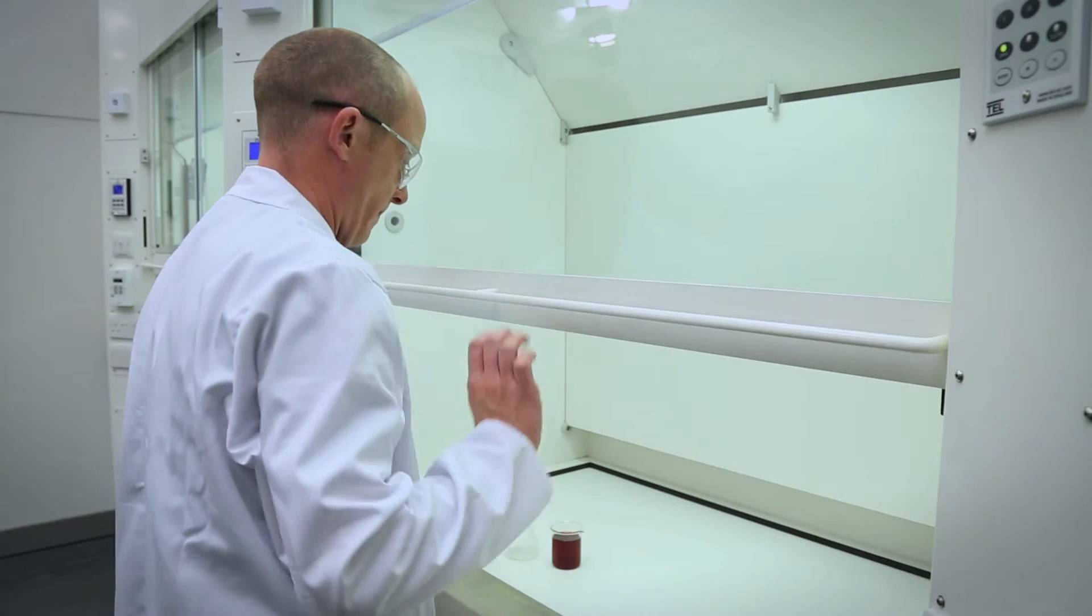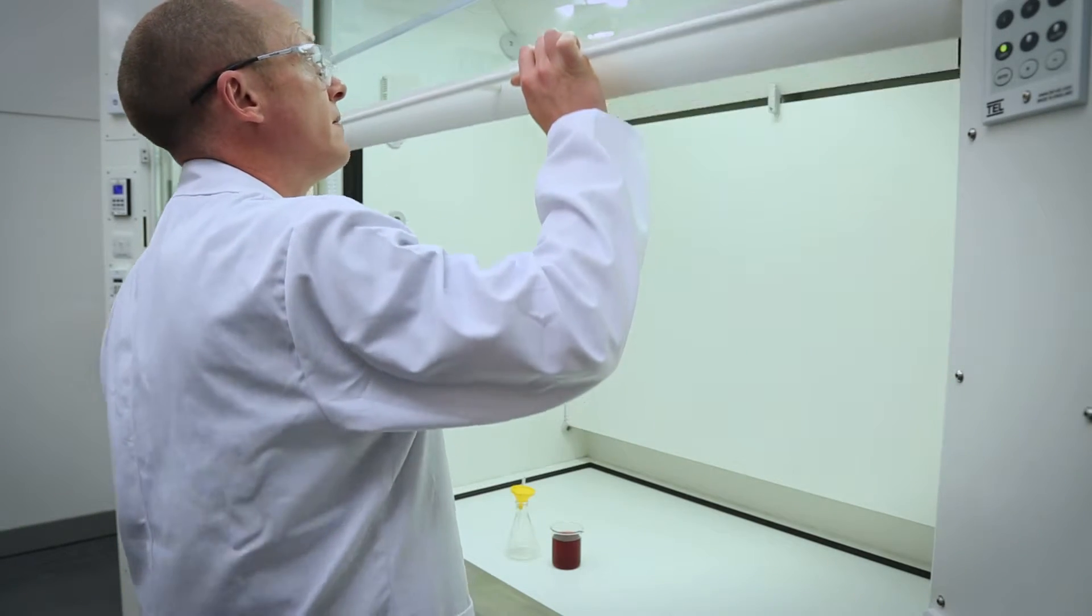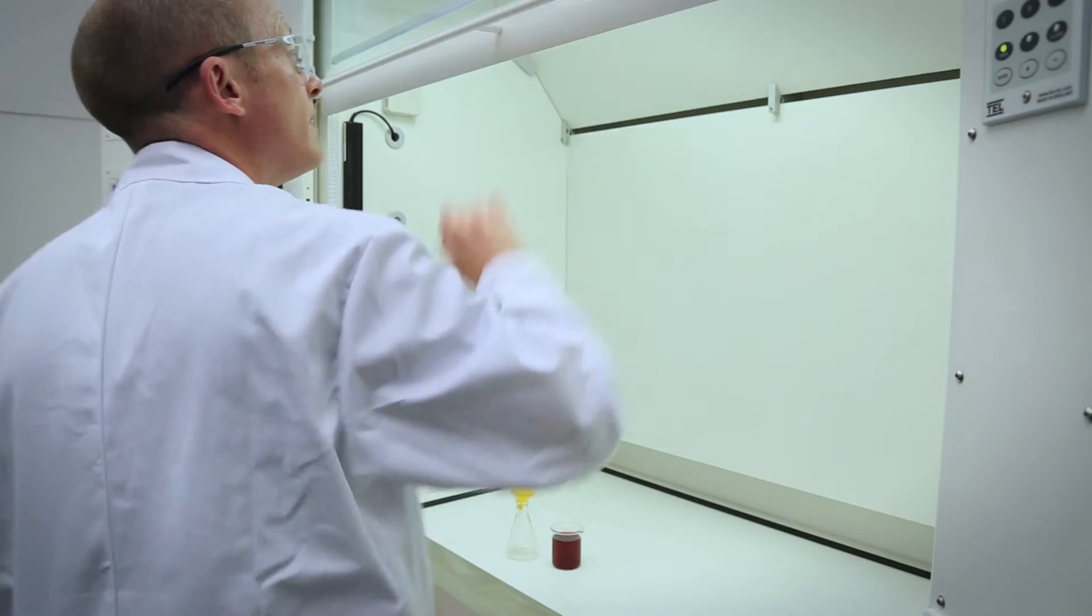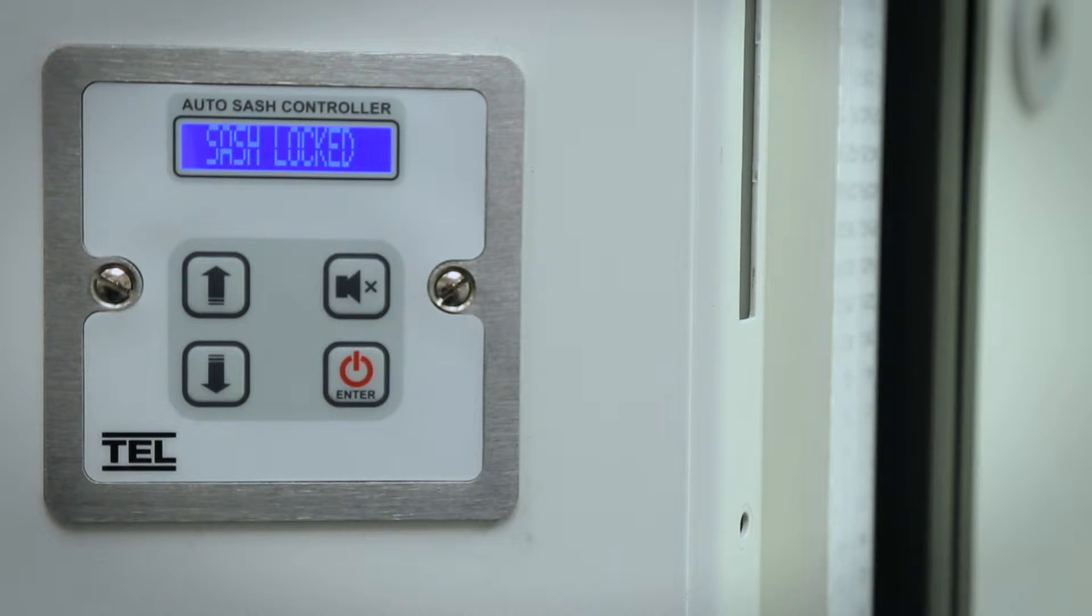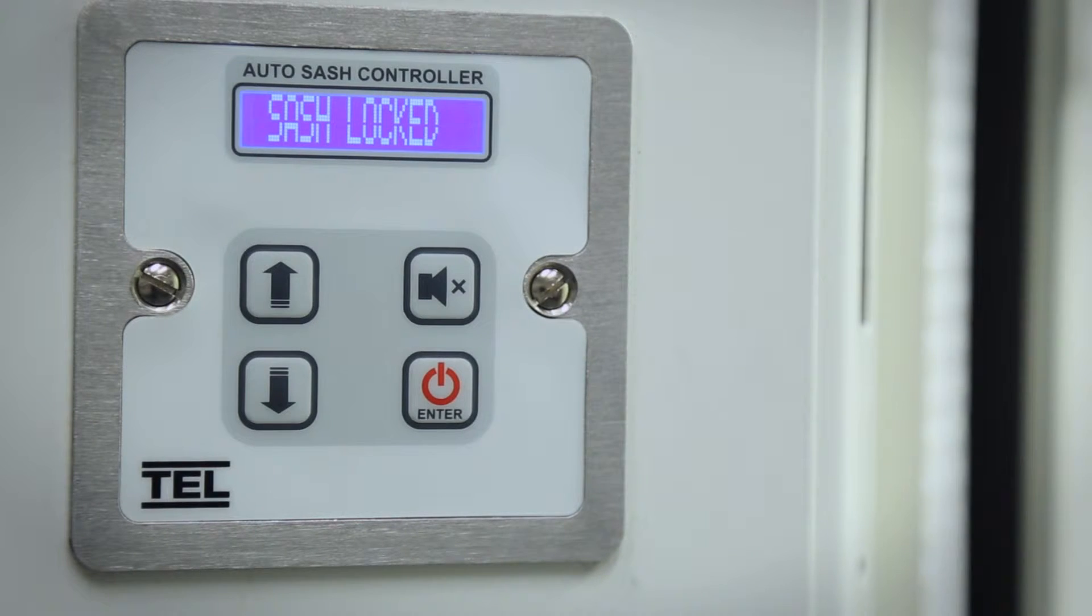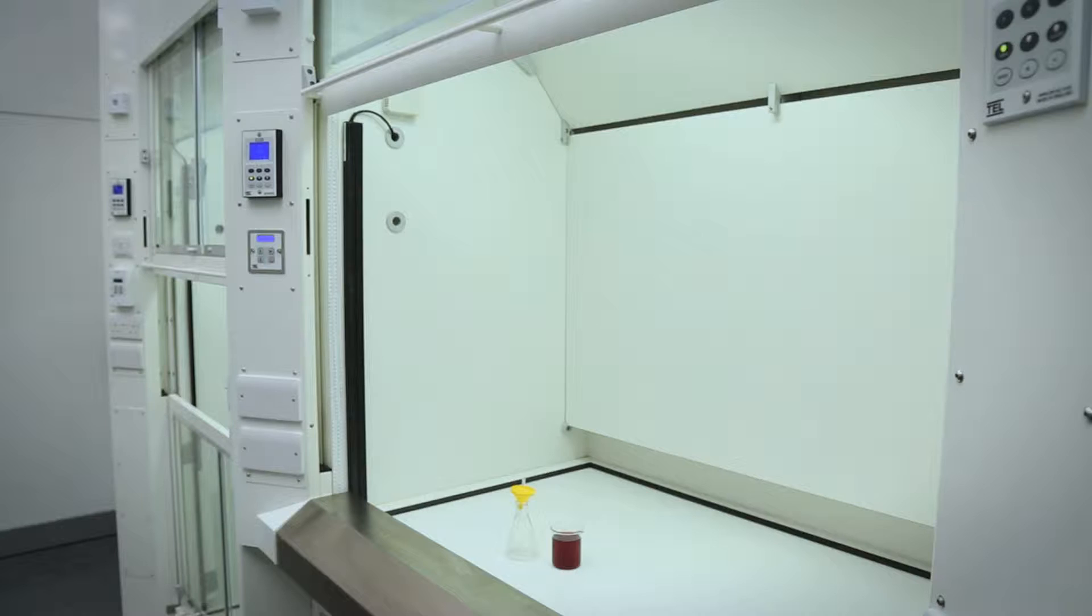When the optional sash lock feature is enabled, the user can lift the sash fully open and it will automatically disable the auto sash to allow for the loading and unloading of equipment. This will activate a timer that will give an alarm to release the sash lock if left unattended in this position for a predetermined adjustable time.